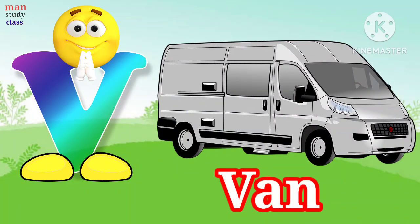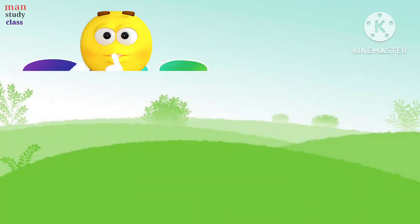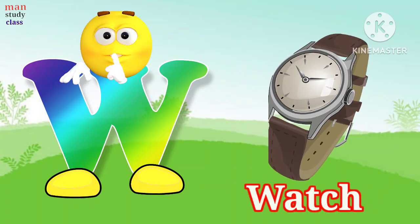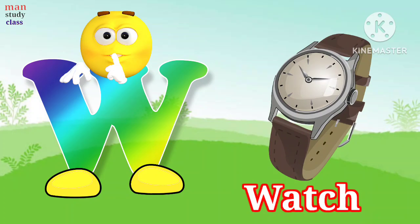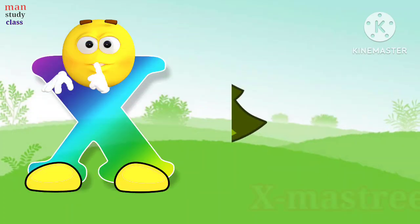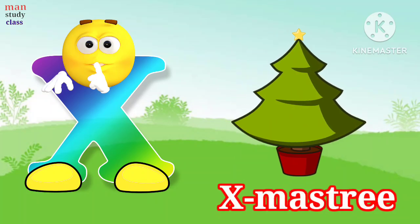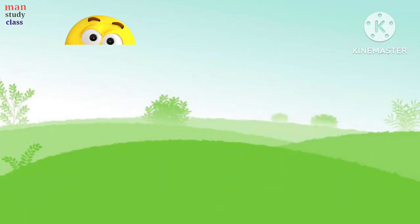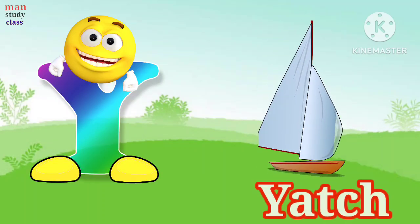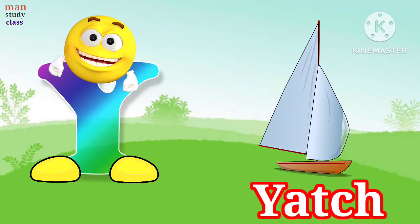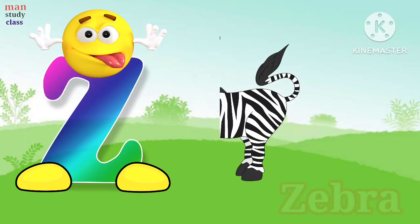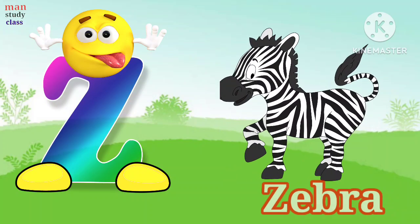V for van, van means ghaadi. W for watch, watch means ghaadi. X for xylophone, xylophone means xylophone. Y for yacht, yacht means naam. Z for zebra, zebra means zebra.